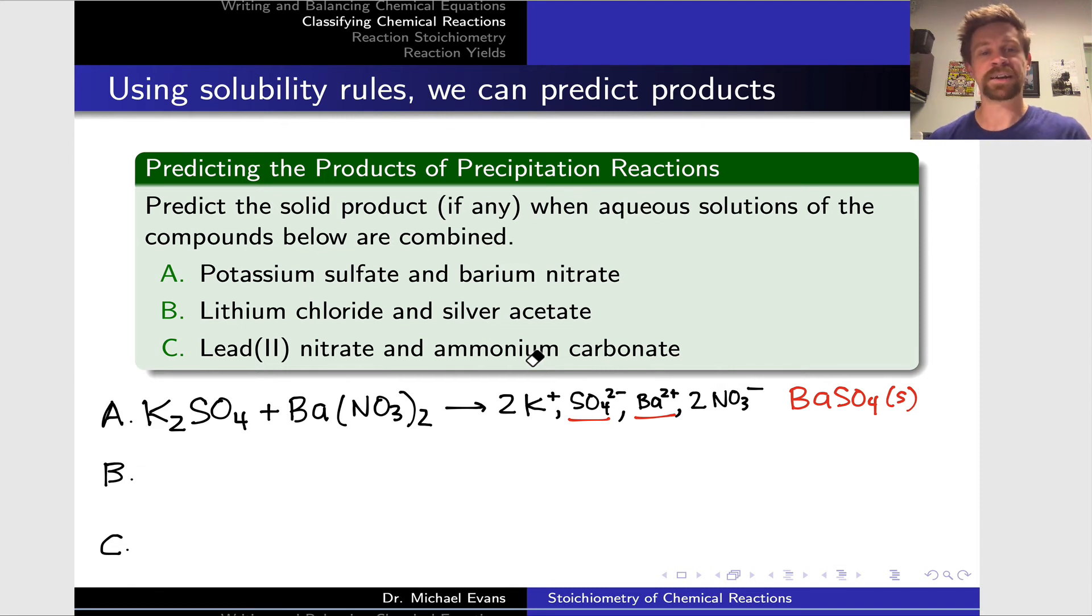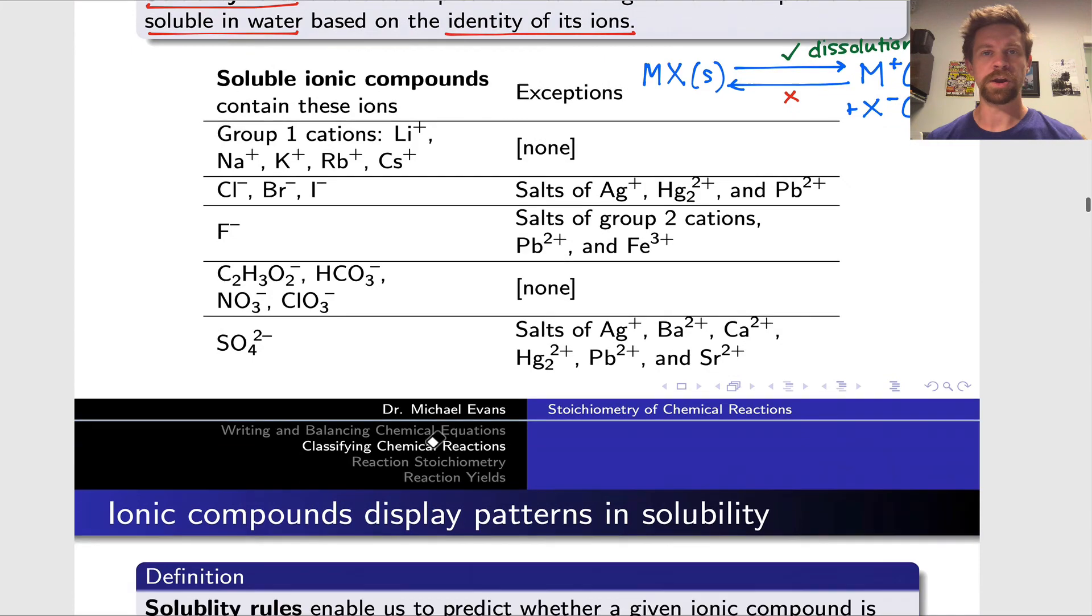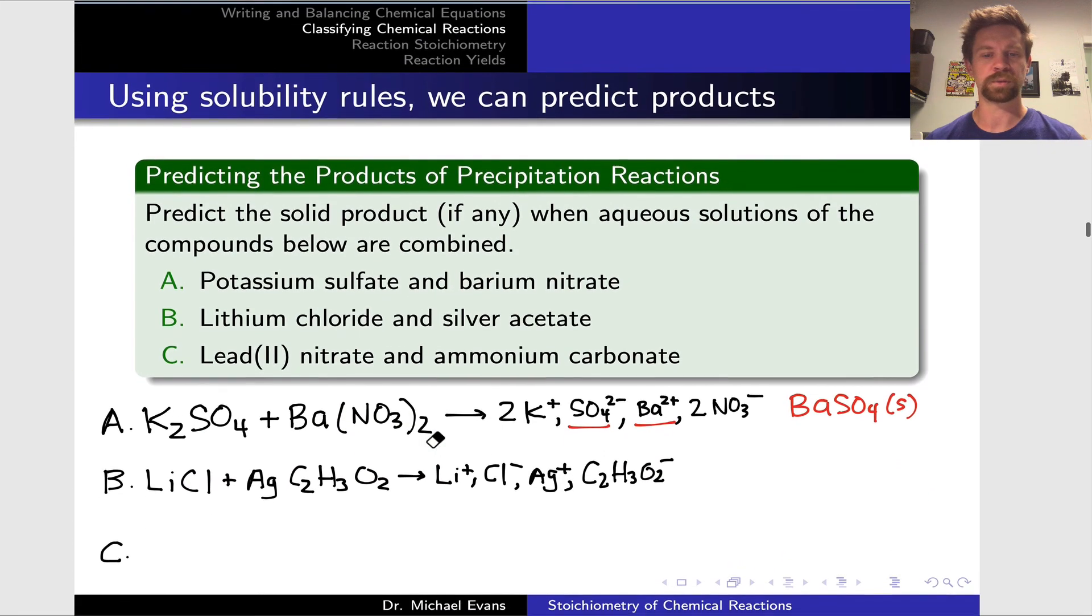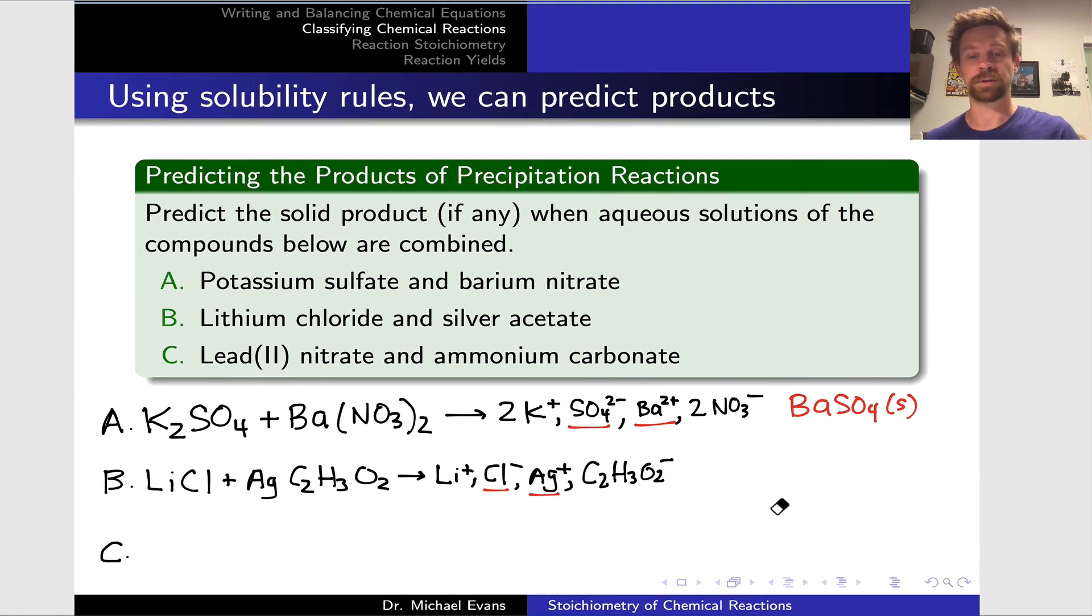In the second example, we've got lithium chloride and silver acetate. So Li+, Cl-, Ag+, and acetate C2H3O2-. Let's again think about switching the ions and looking for an insoluble salt after we make the switch. Lithium is a group one cation. Absolutely nothing is insoluble when it's paired with lithium plus, so that will remain in solution. Acetate forms a large number of soluble salts as well. In fact, it's one of these with no exceptions. Acetate salts are always soluble in water. That only leaves silver plus and Cl-. We actually saw previously that these two form an insoluble salt. This is one of the exceptions to the rule that halide salts are soluble.